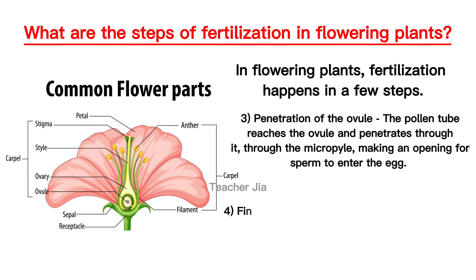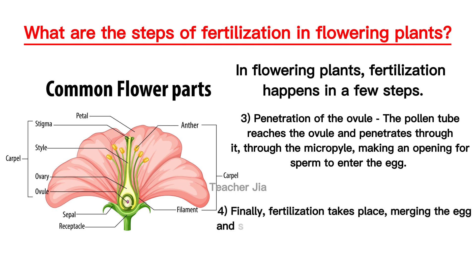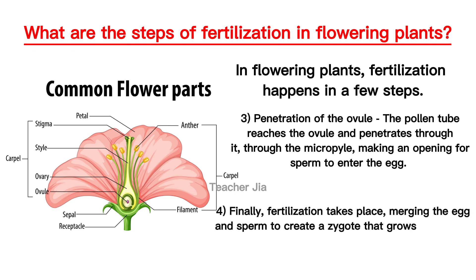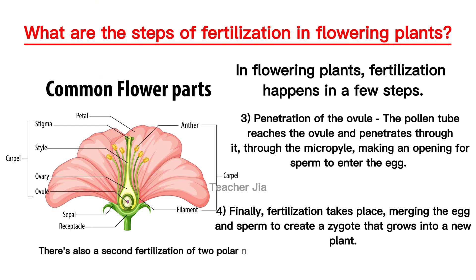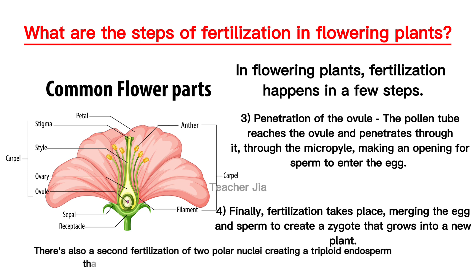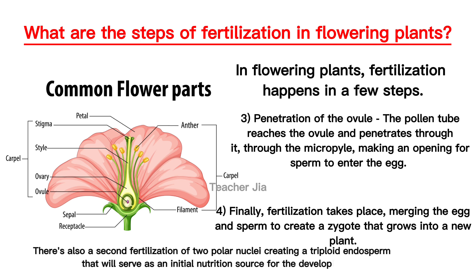Finally, fertilization takes place, merging the egg and sperm to create a zygote that grows into a new plant. There's also a second fertilization of two polar nuclei, creating a triploid endosperm that will serve as an initial nutrition source for the developing plant.